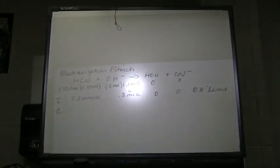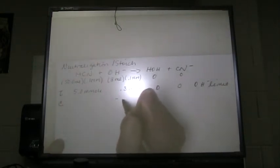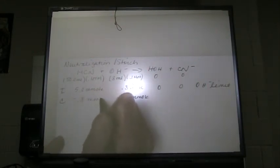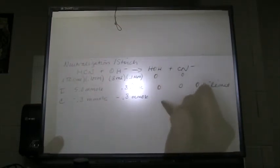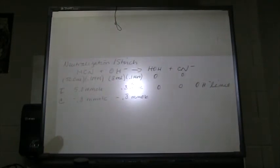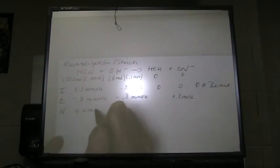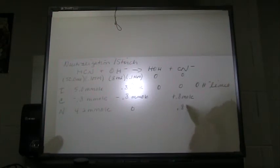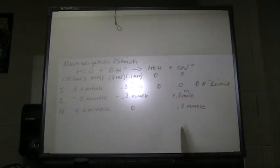The limiting reactant in this neutralization is the OH⁻. The OH⁻ is going to limit the change. All of the OH⁻ will be used up. The stoichiometry is 1 to 1, so we use the same amount of HCN. At the end of neutralization, I have 4.2 millimoles of HCN remaining, and 0.8 millimoles of CN⁻ formed. This is the end of the neutralization step.